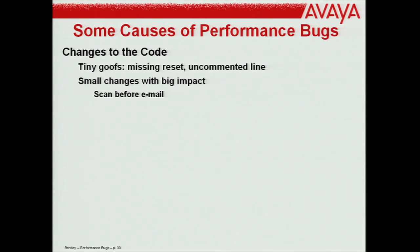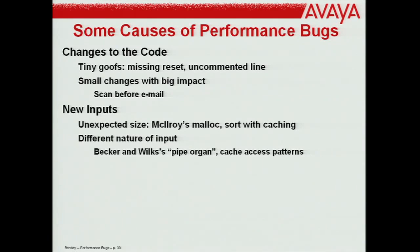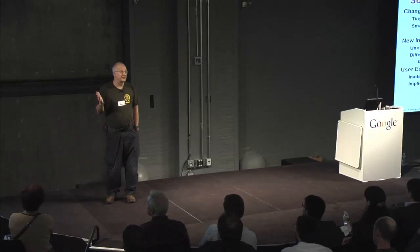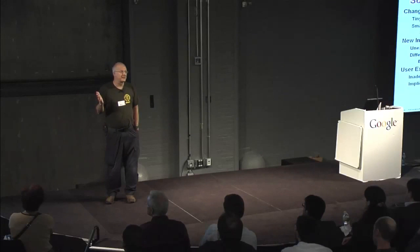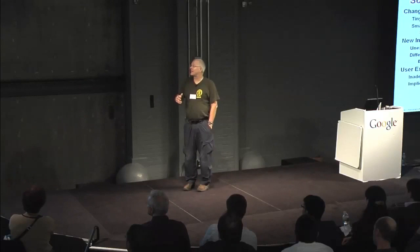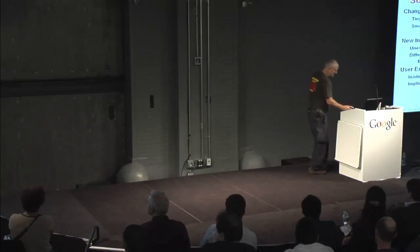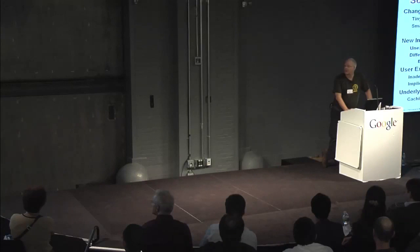What causes performance bugs in general? Changes to code, tiny goofs, thinkos, typos, small changes to big inputs, new kinds of inputs, inputs of unexpected size, different nature of inputs, and user expectations you didn't anticipate. You really have to be careful: some things can be added onto a system later, but security and performance have to be designed in from the very start. You need to know what the user really wants from day one.